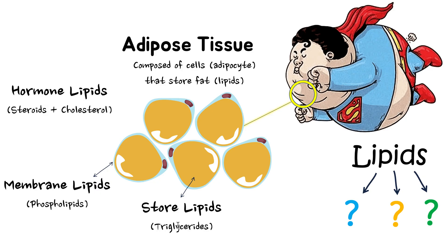One key word you need to know is adipose tissue. When triglycerides — the fat molecules — get stored, they go into your fat cells, which we call adipocytes. You can see that these adipocytes are so full of fat that it squeezes the nucleus to the side, whereas in a normal eukaryotic cell the nucleus sits in the middle. When you have a bunch of adipocytes together, we call that adipose tissue — 'adipose' is simply another word for fat.